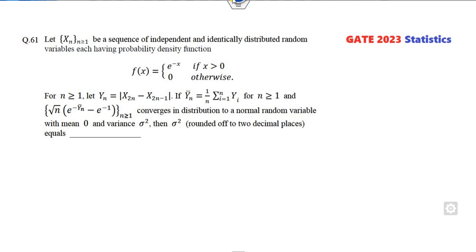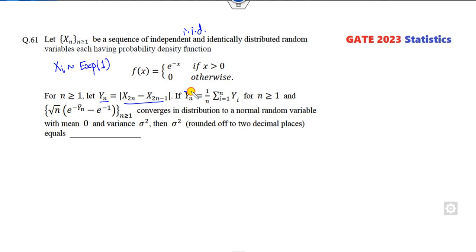Let us start with these questions using shortcut tricks. Remember, you have to read the statement very carefully. X_N is a sequence which is IID having a normal probability density function. X_i follows exponential distribution with parameter 1. Once it is exponential distribution, then Y_N is defined as another sequence. Y_N bar is the mean of that sequence and you have to find its convergence to a distribution with mean 0 and some variance.